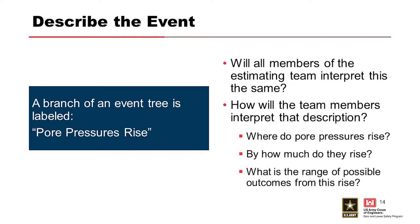We need a clear and unambiguous description of the event probability to be estimated so the entire team is on the same page. While this may not be put on the event tree itself, the description needs to be captured somewhere. For example, if an event is described as 'pore pressures rise,' will all team members interpret this the same way? Where do the pore pressures rise? By how much? What are the possible outcomes given the rise occurs? These are all things that need to be clear.